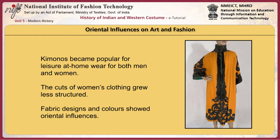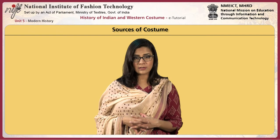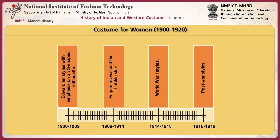During this period, trade routes to Japan were opened in 1850, influencing art and fashion. Japanese art influences were seen in Impressionism. Kimonos became popular for leisure and home wear for both men and women, and the cuts of women's clothing grew less structured. Fabric designs and colours showed more Oriental influences. The main sources of information on costumes for this period are surviving clothes, photographs, magazines, mail order catalogues, store catalogues, and motion pictures.